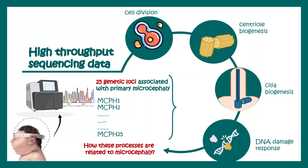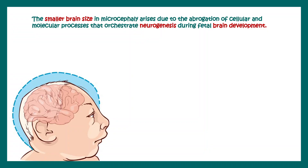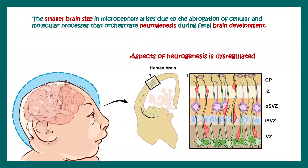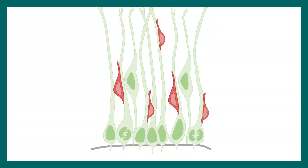The question is how these processes are related to microcephaly. The smaller brain size of a microcephaly patient arises due to abrogation of cellular and molecular architecture while neurogenesis is happening. Neurogenesis is the process when neurons are born from stem cells. This is a cross-section of a microcephaly patient, and overall we can understand that aspects of neurogenesis are dysregulated.